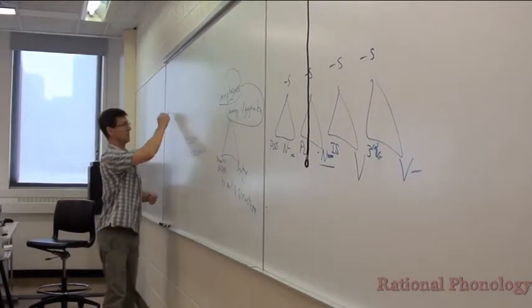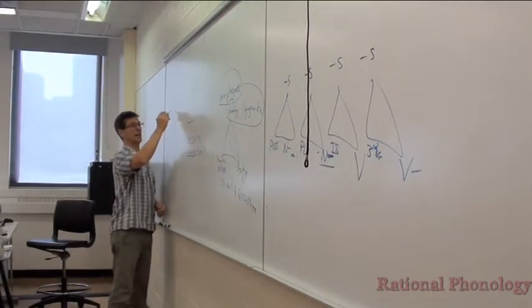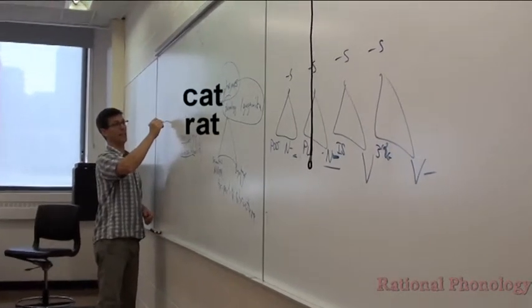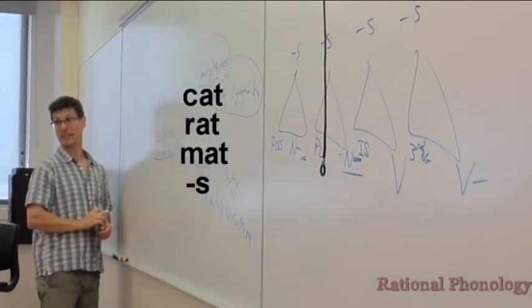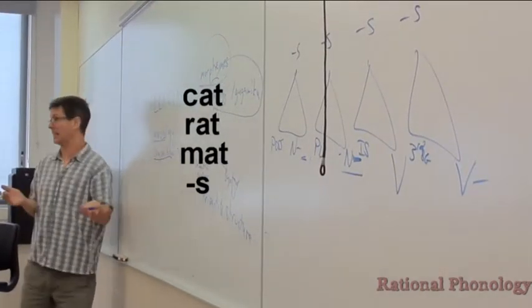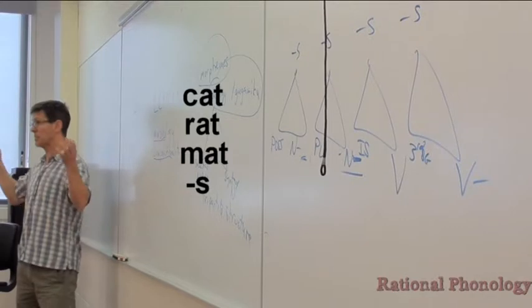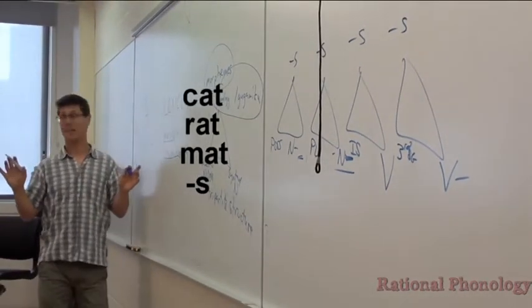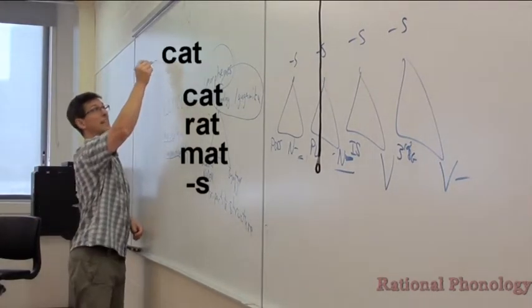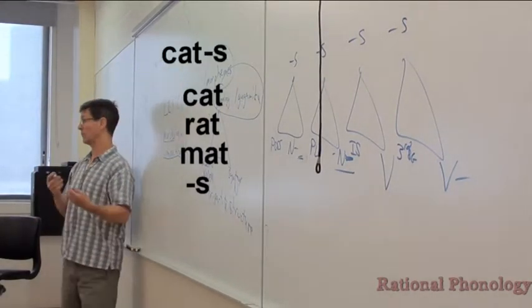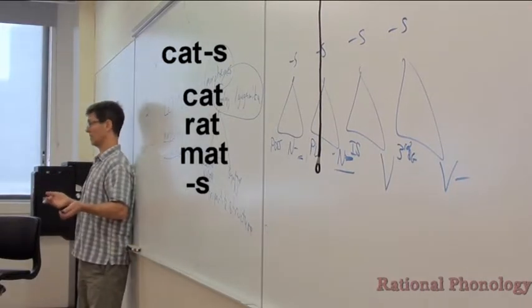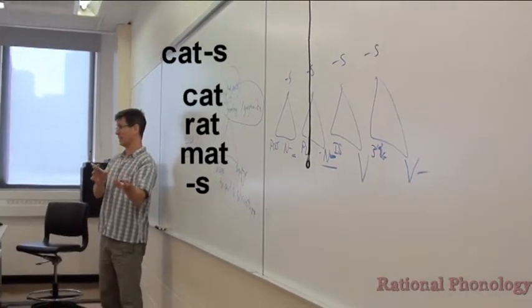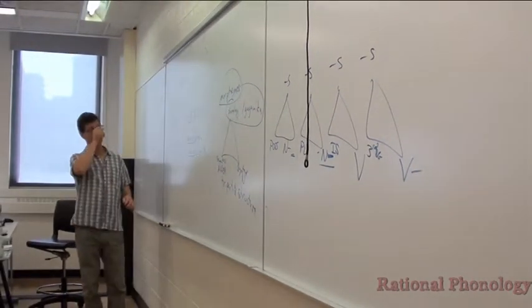If you just have a lexicon that has right and cat and rat and mat and plural, but just like that, you're not going to get words. You need some system that we don't have to worry about because we're in phonology class, some system that says oh I can take cat and then combine it with plural and get the word cats.